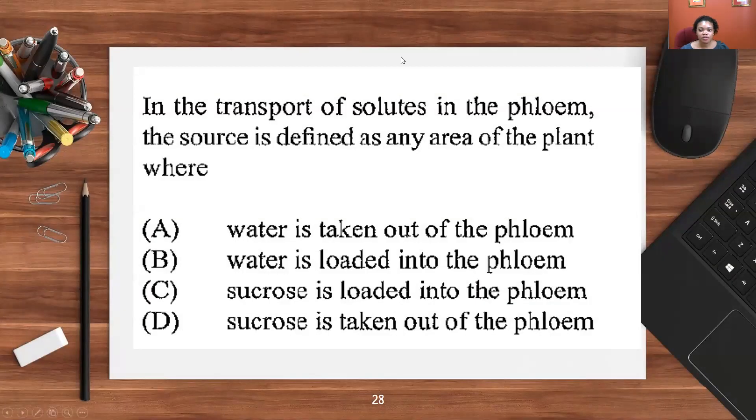In the transport of solutes in the phloem, the source is defined as any area of the plant where? We just talked about the source and the sink. The source is where it originates, where it is made. The sink is the destination. So the answer is C: sucrose is loaded into the phloem. That is the source.